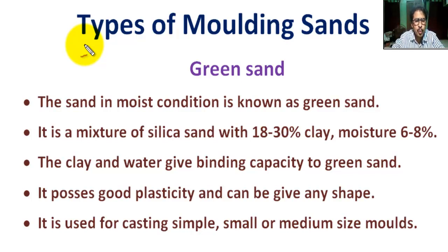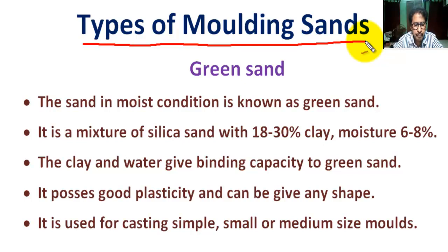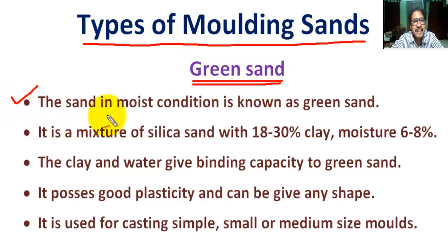Hello students, today we are going to learn about the types of molding sand used in foundries. Sand is used in different conditions and having different uses. First, what is green sand? The sand in moist or wet condition is known as green sand.